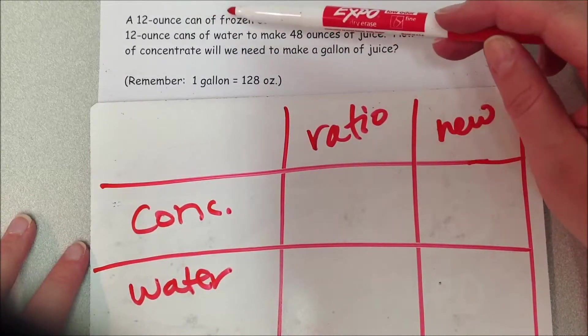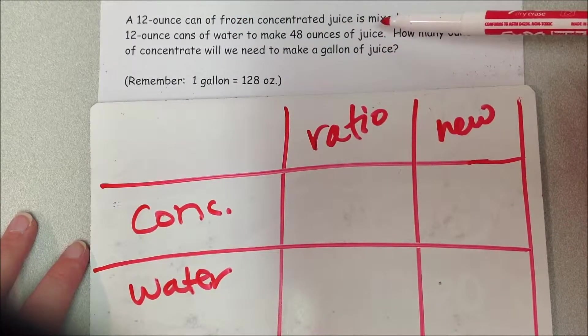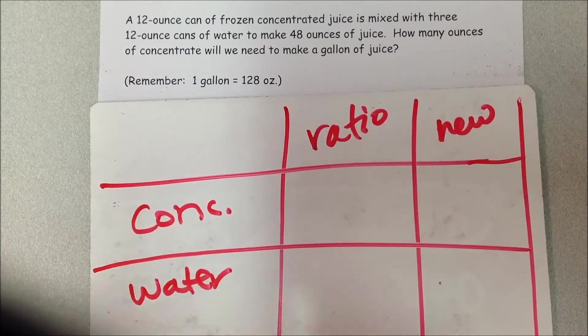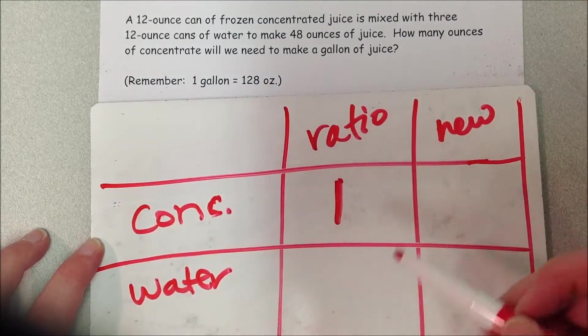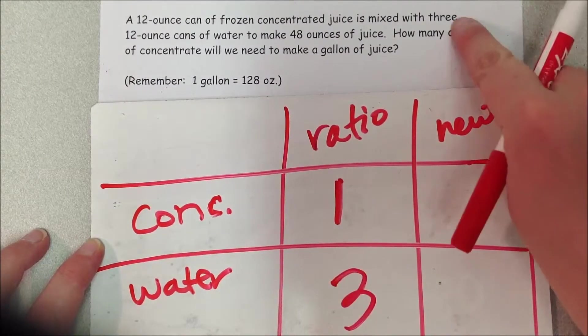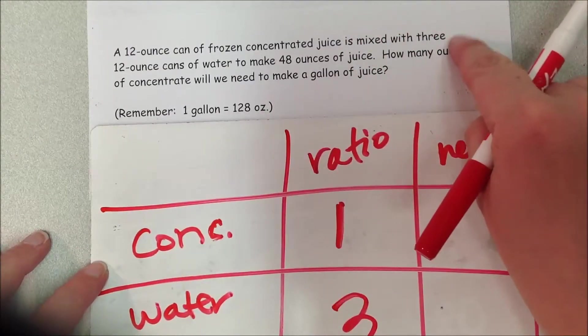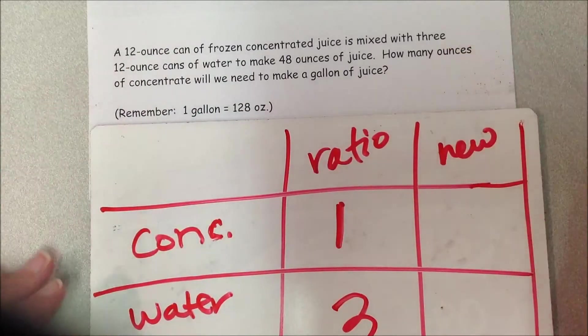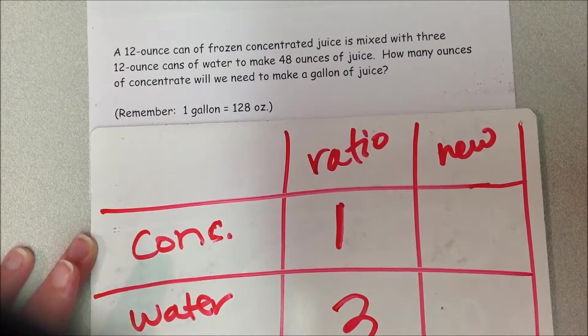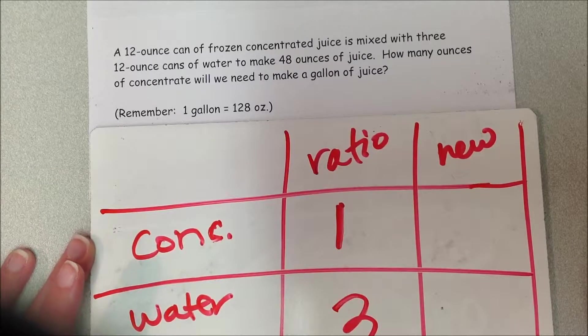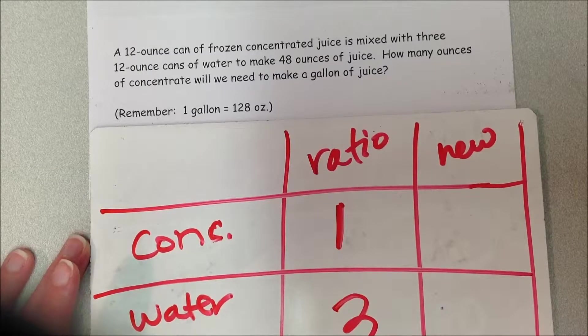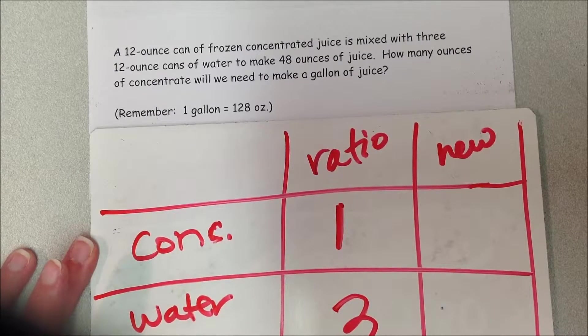There's one can of frozen concentrated juice mixed with three 12-ounce cans of water, and that's going to make 48 ounces of juice. So this is good information to know. I actually think that that 48 ounces is unnecessary.